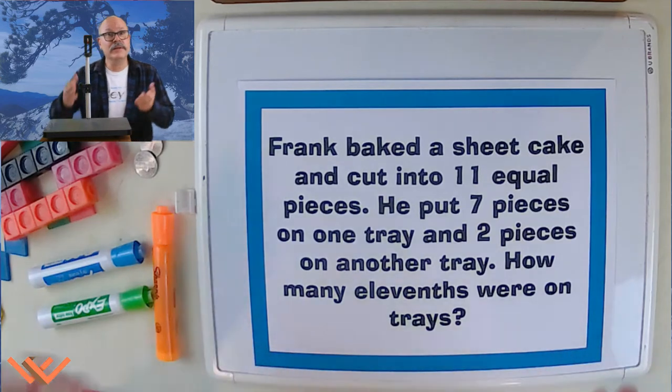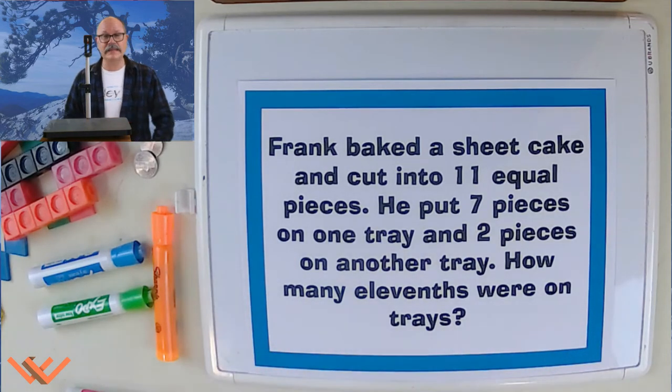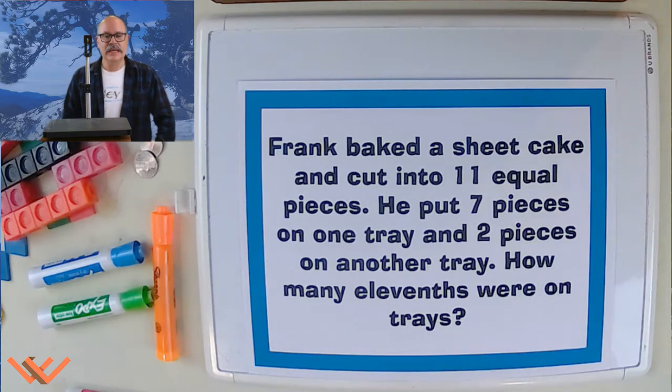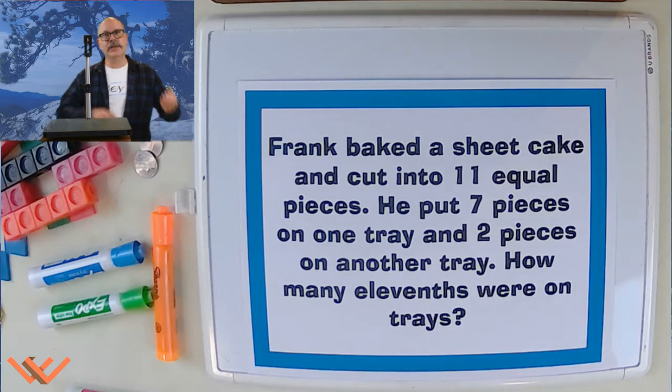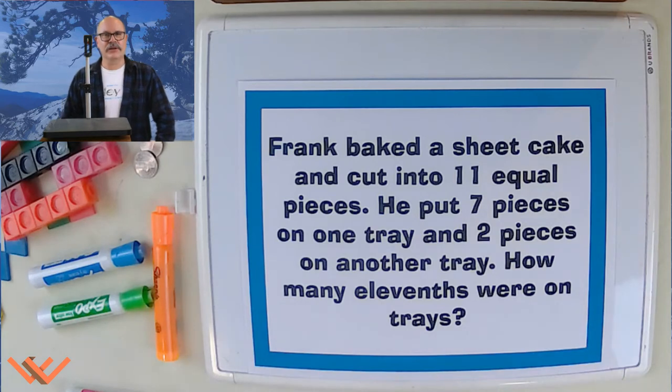We have a problem here. It says, Frank baked a sheet cake and cut it into 11 equal pieces. He put 7 pieces on one tray and 2 pieces on another tray. How many elevenths are on trays? Let's take a look.